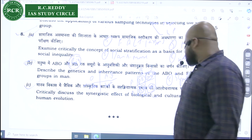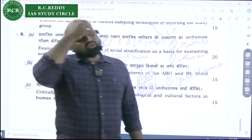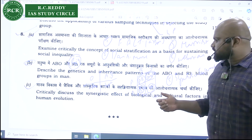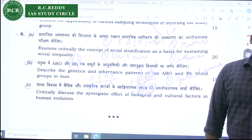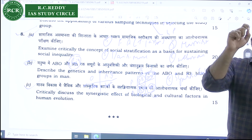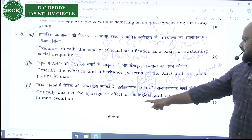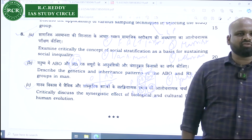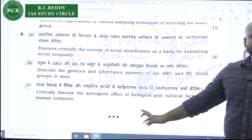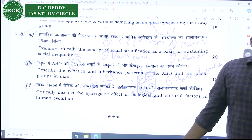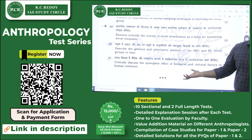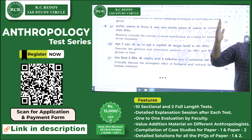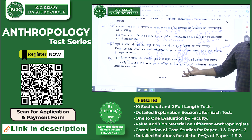The last question is on the synergistic effect of biological and cultural factors in human evolution. You need to discuss the bio-cultural aspect, which corresponds directly to section 1.4 of the syllabus. The core discussion involves biological determinism and cultural determinism, covering language, organic evolution, and the humanization process — examining how physiology and cultural aspects change together.